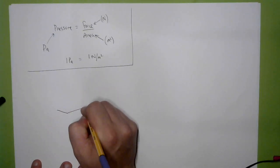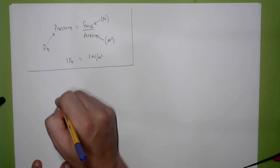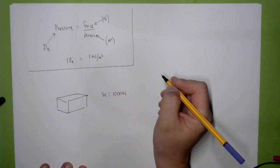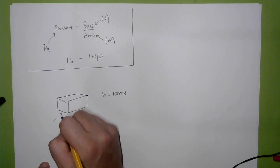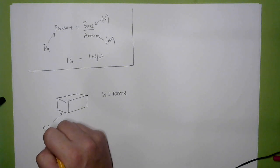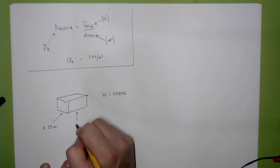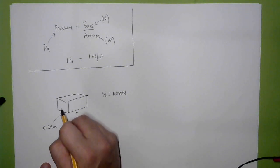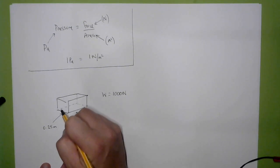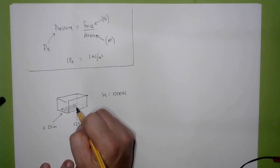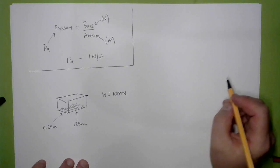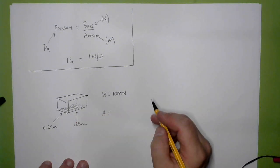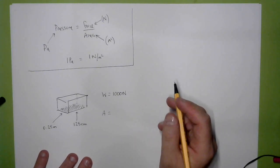If we have a box with a known weight, so the weight is 1000 Newtons and it has dimensions 0.25 metres by 125 centimetres, then we know that the area that we're interested in, if we want to calculate the pressure that the box exerts on the floor, the area is given by that. The area of a rectangle is the product of these two quantities, 0.25 metres and 125 centimetres.